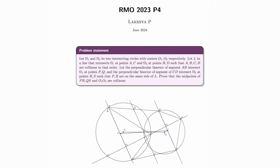Today, I will be presenting a solution to RMO 2023 problem 4. In the problem, we are given two circles, omega 1 and omega 2. There is a line L which passes through both of them intersecting at points AB and CD. We have the perpendicular bisector PQ of segment AB and perpendicular bisector RS of CD. We have to show that the midpoint of PR, the midpoint of O1O2, and the midpoint of QS are collinear.